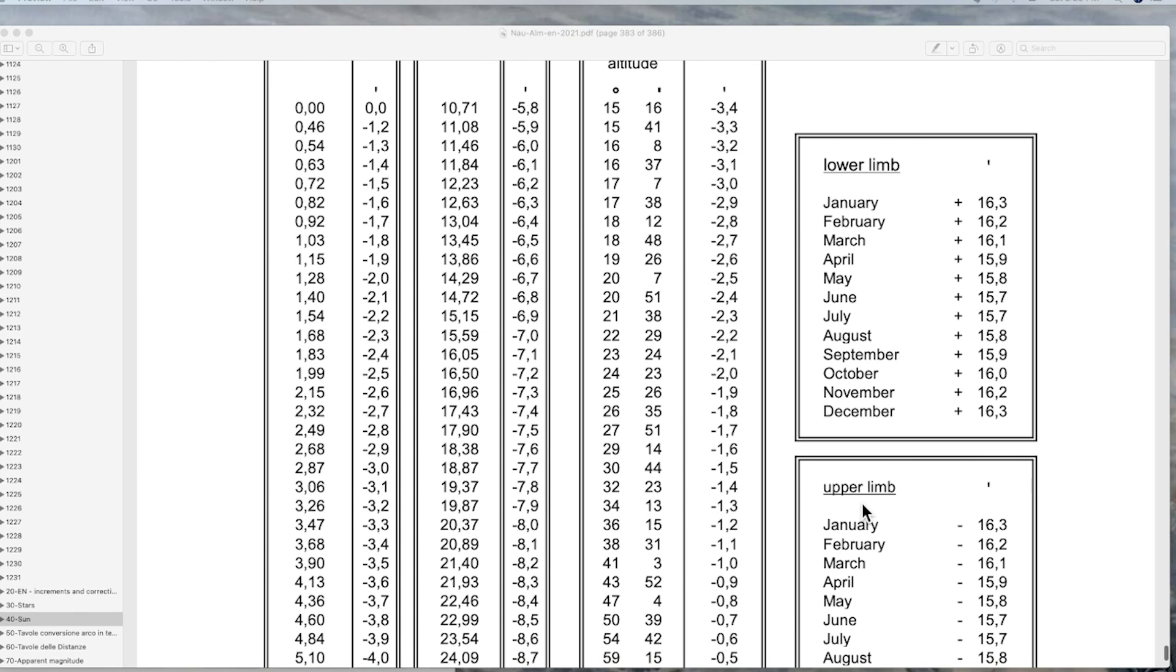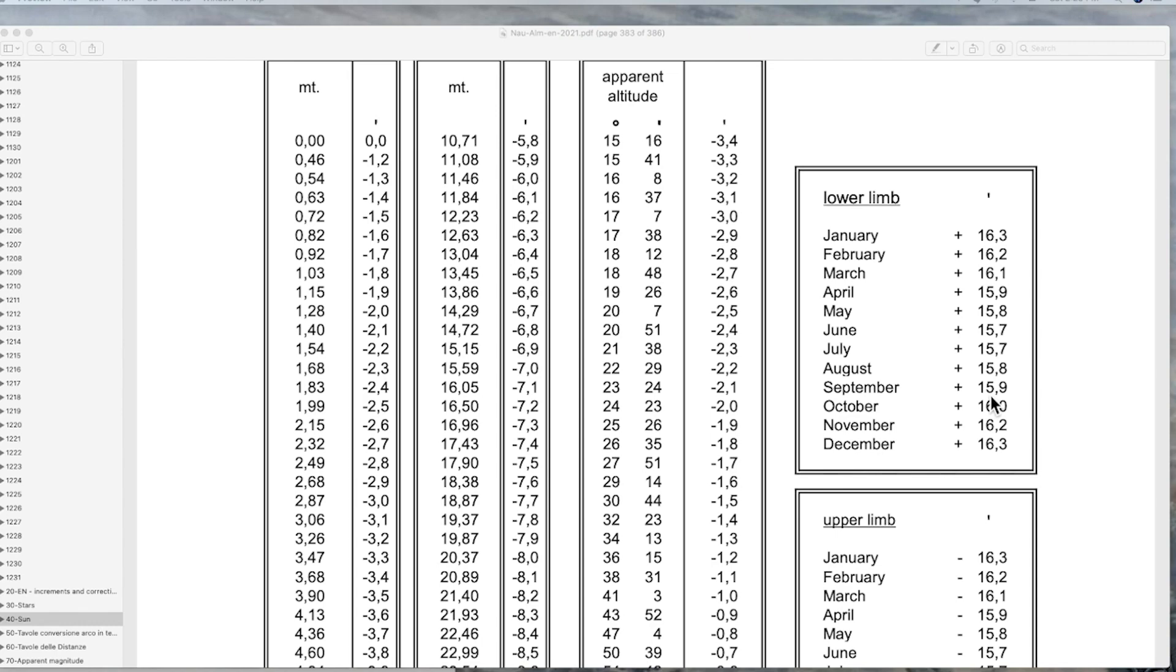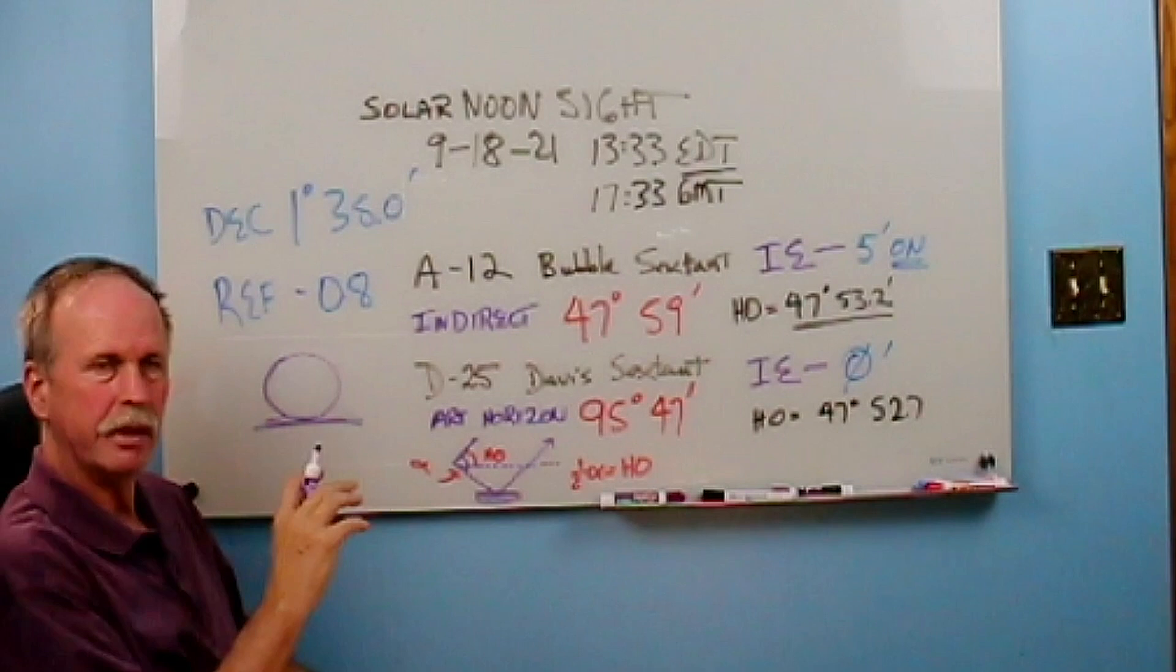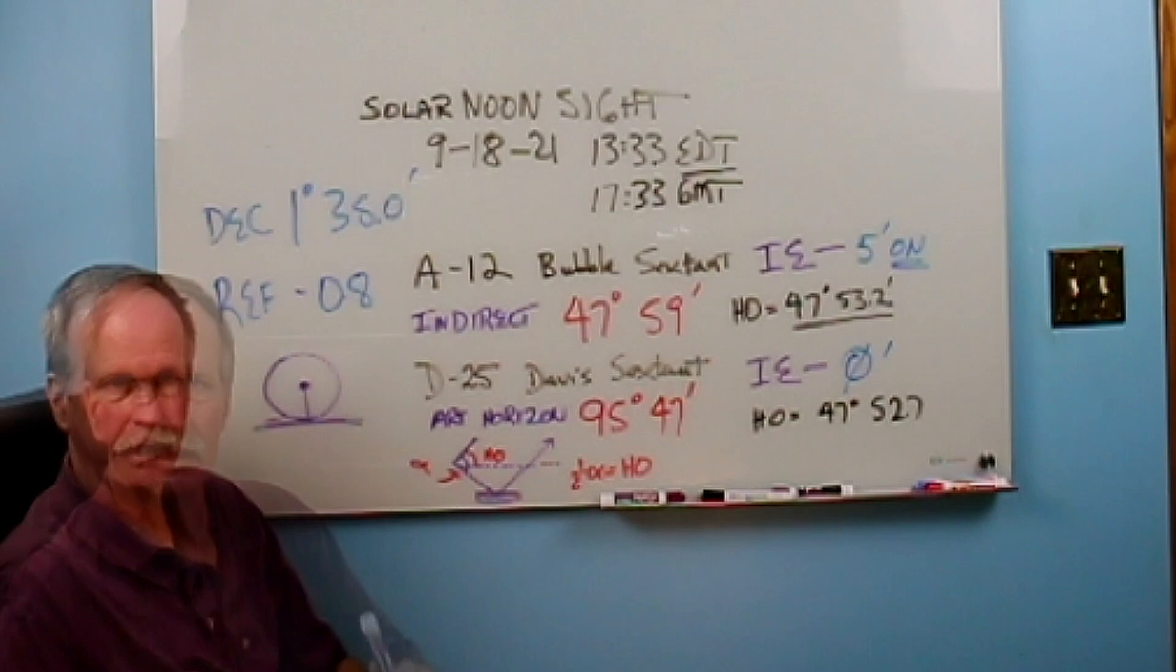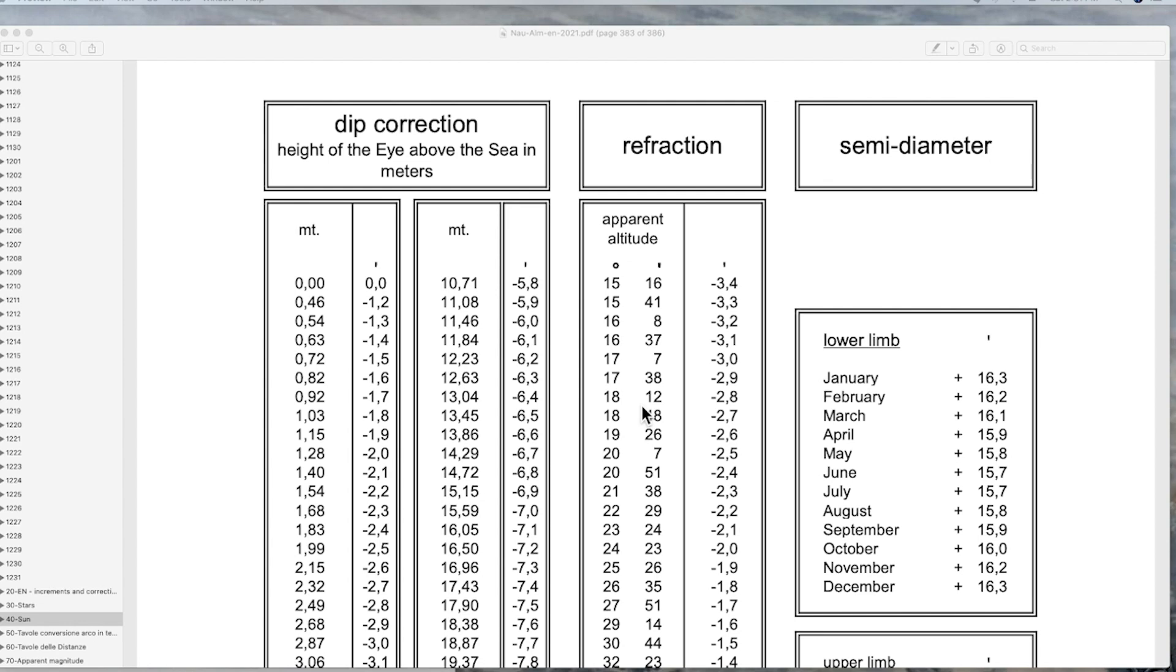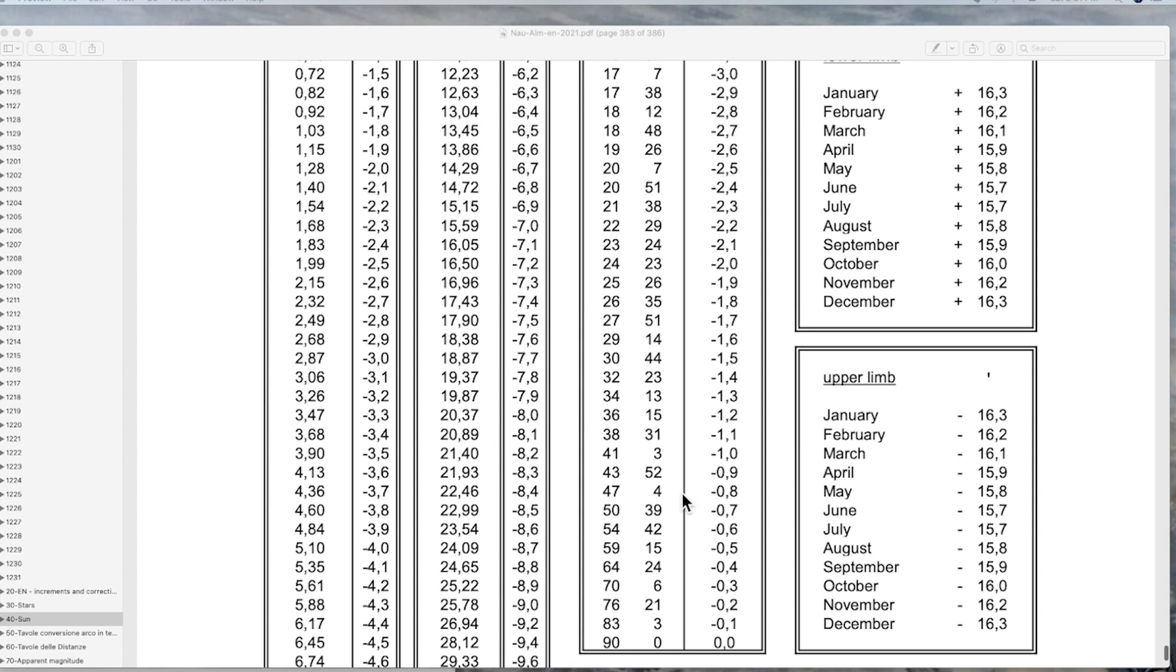the lower or the upper limb of the sun. Now had we been measuring to the lower limb of the sun today, we would have had to add 15.9 minutes to our reading. So if we were reading to the lower limb of the sun, that semi-diameter correction would have raised us to the center of the sun, which is where we want our reading. What we do need to do, however, is correct for refraction. And the refraction correction is here. Our apparent altitude of the sun was 47 degrees, so we're going to have to subtract 0.8 minutes from our reading. Now let's go ahead and see what we have.